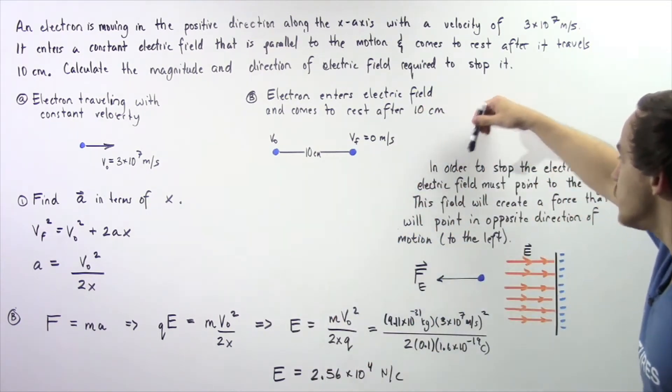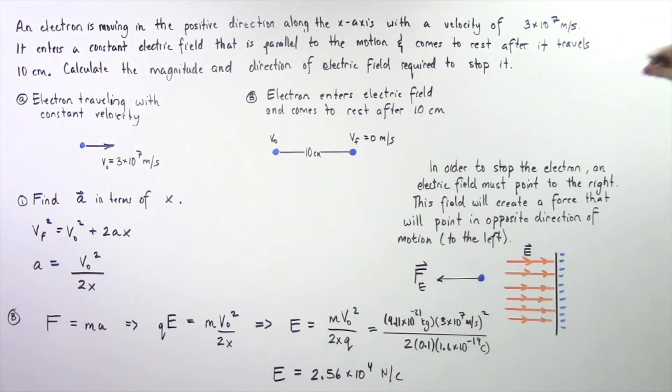In order to stop the electron, the electric field must point to the right along the x-axis.